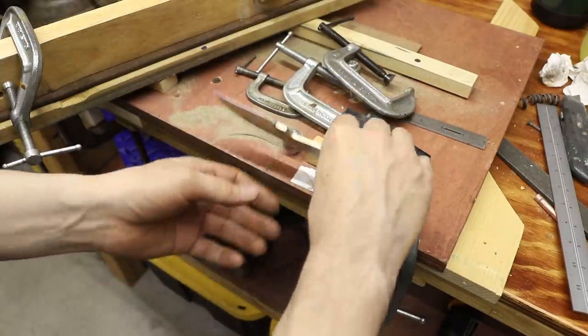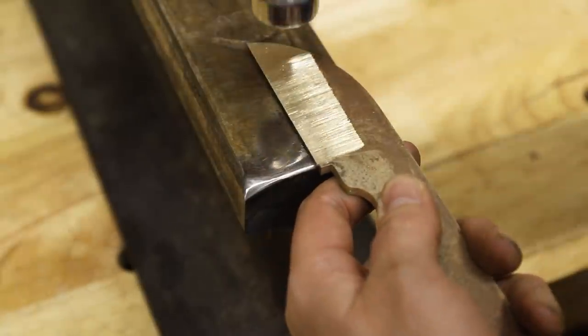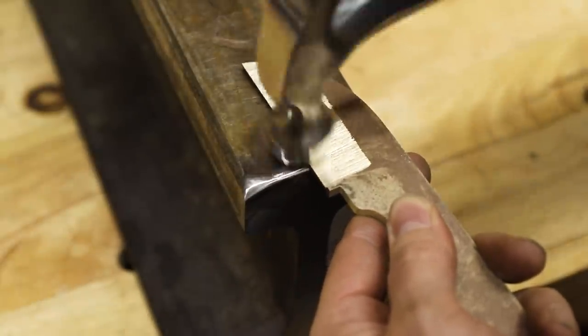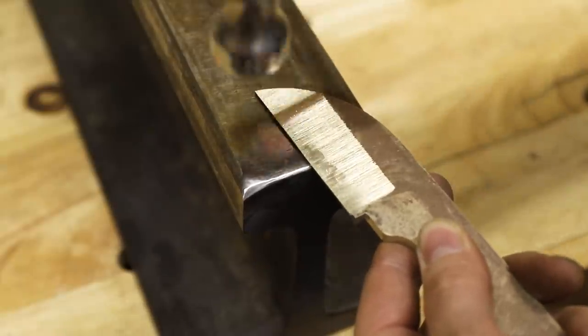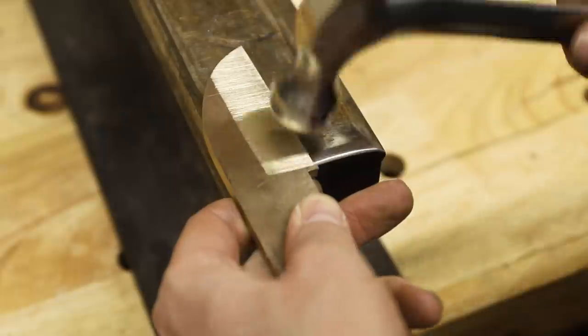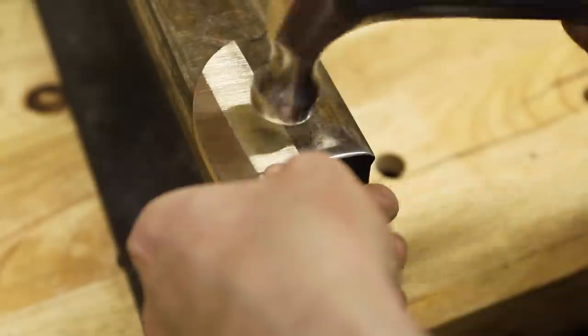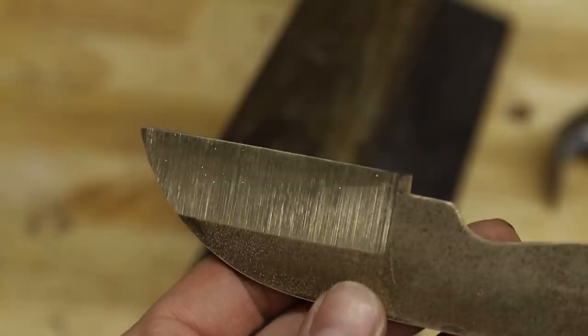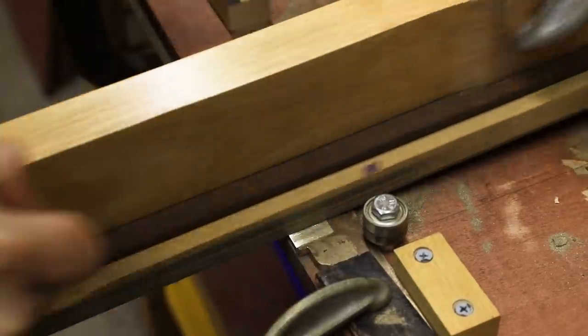Once I was about halfway done with the grind I cold forged the edge of the blade. This process actually increases the hardness of the metal by crushing its crystalline structure.